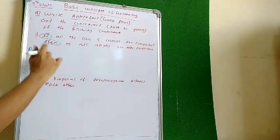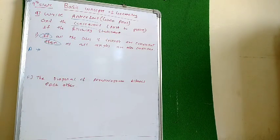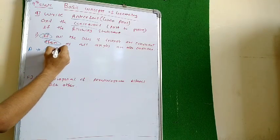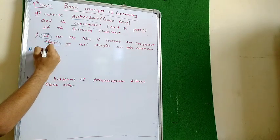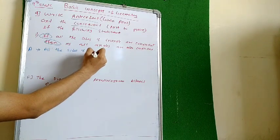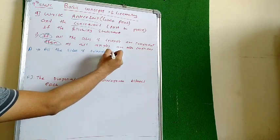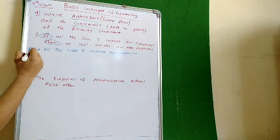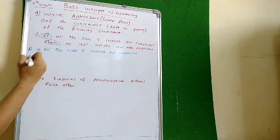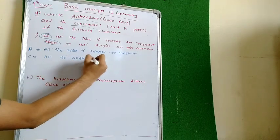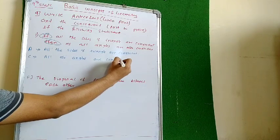Whatever is there after 'if' is the antecedent. And whatever is after 'then' is the consequent. If all the sides of the triangle are congruent, then all the angles are congruent.